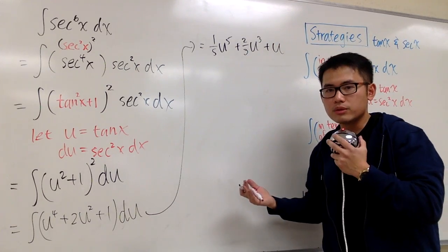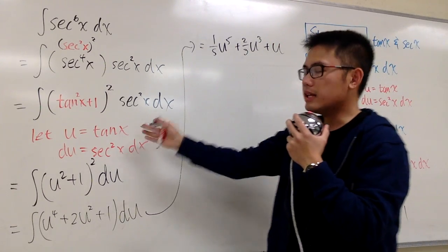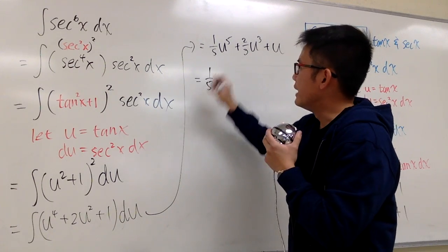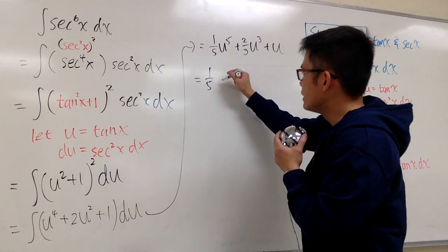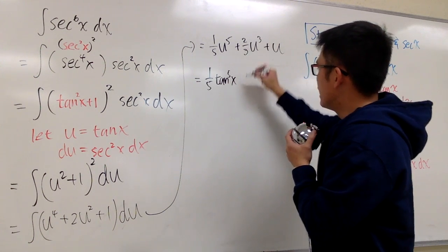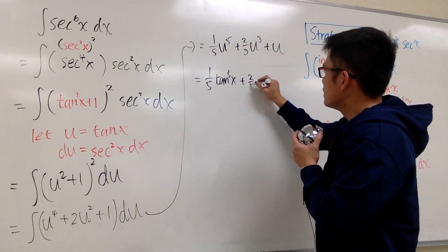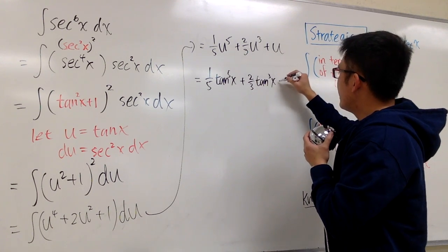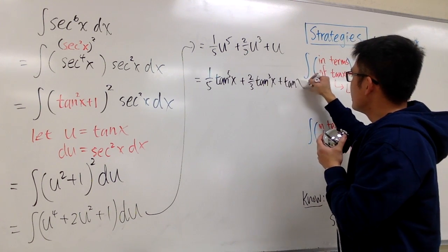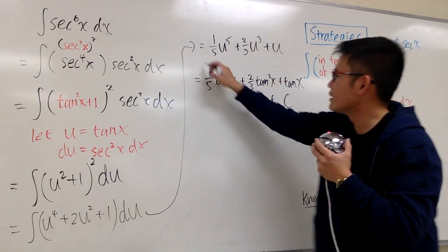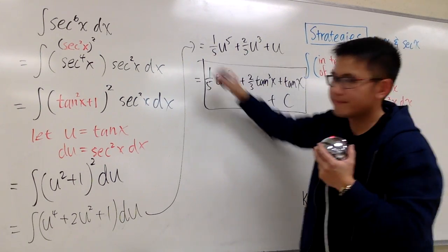We are done in the u world, now we just have to go back to the x world. So we will have 1/5, and this time the u is tangent x, so I'll just put down tangent to the 5th power x, plus 2/3 tangent to the 3rd power x, and then we add it with tangent x. We are done. Put a plus C right here. That's it.